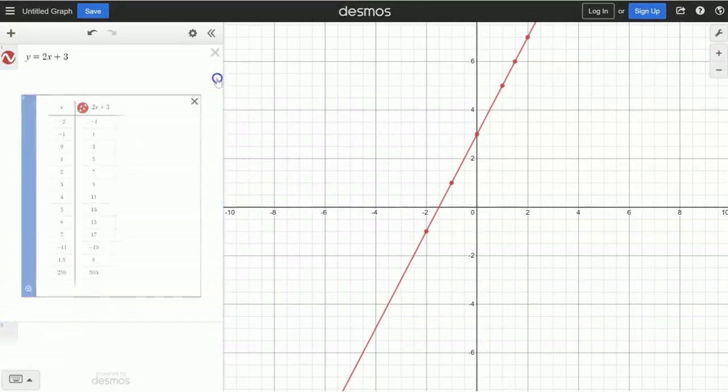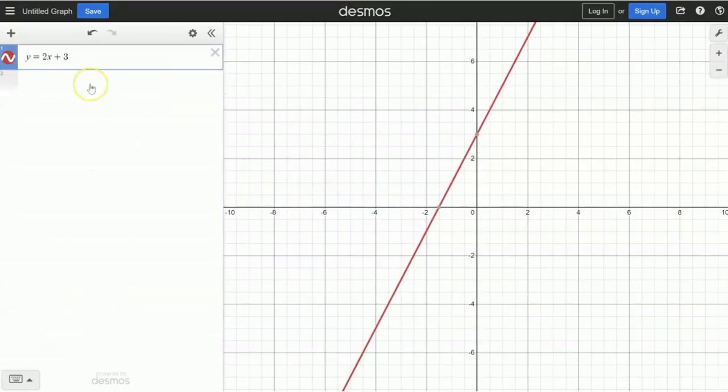All right, I'm going to get rid of this table. But now let's say you wanted to find the point of intersection, the solution, when you have two linear equations. We can type in an additional equation and see where they intersect. What we want to do is just hit the plus, and then that first option where it says expression.